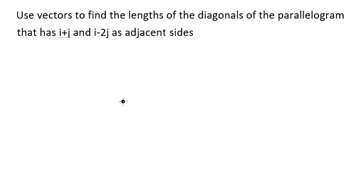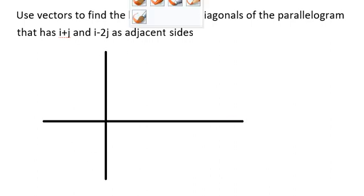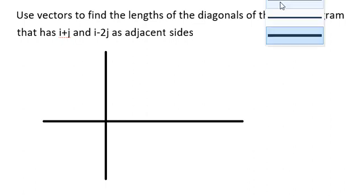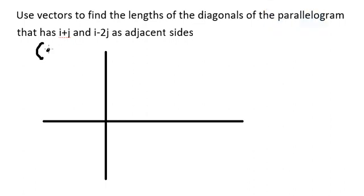Hello everybody. Today I want to talk about vectors. The first thing we need to draw — we know that vector i plus j, so we can know that this vector is about (1, 1). So let's say this location in here is about the center, and from this one we go to (1, 1) in here.